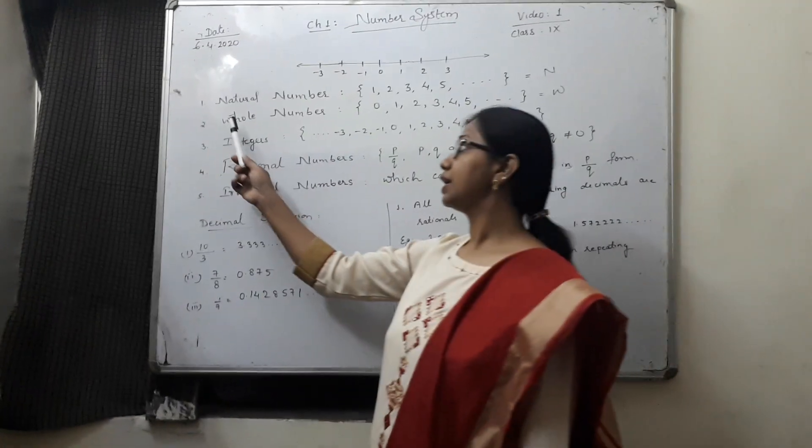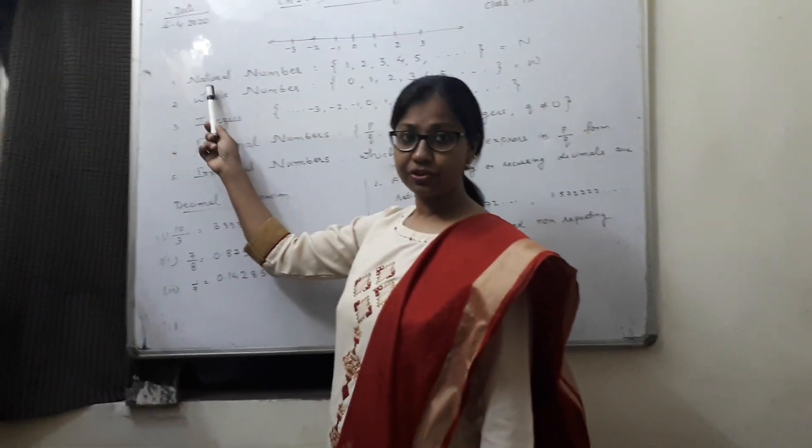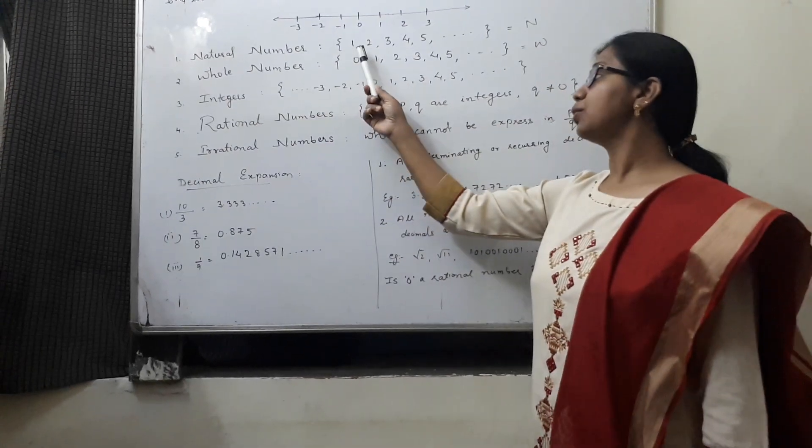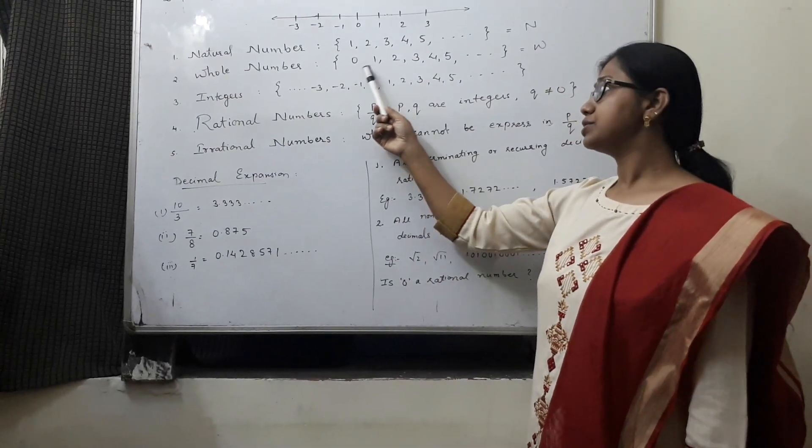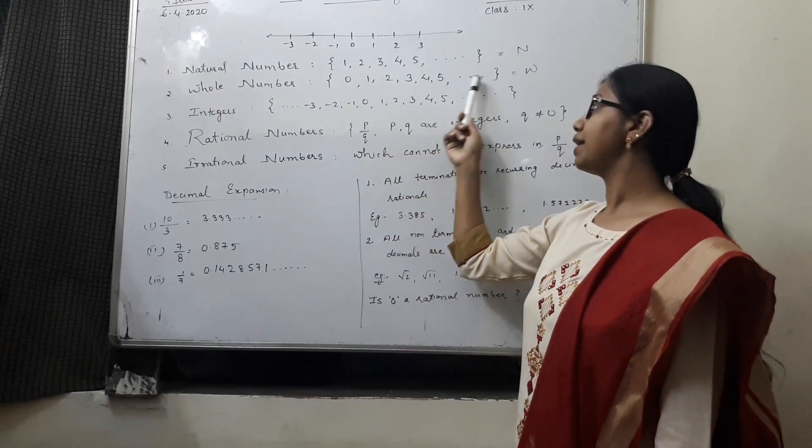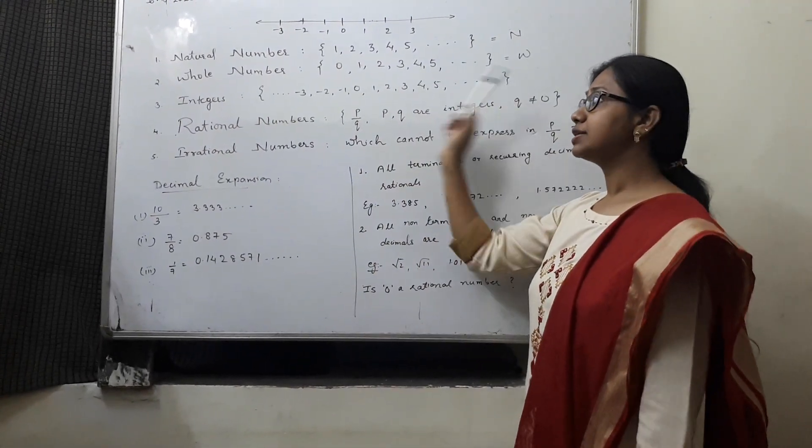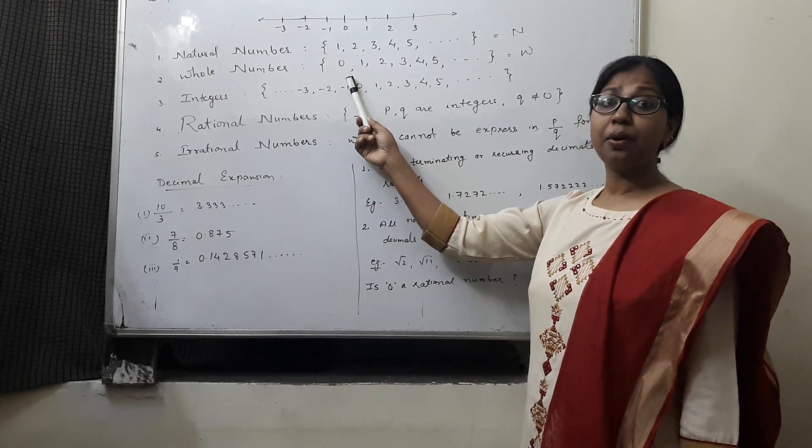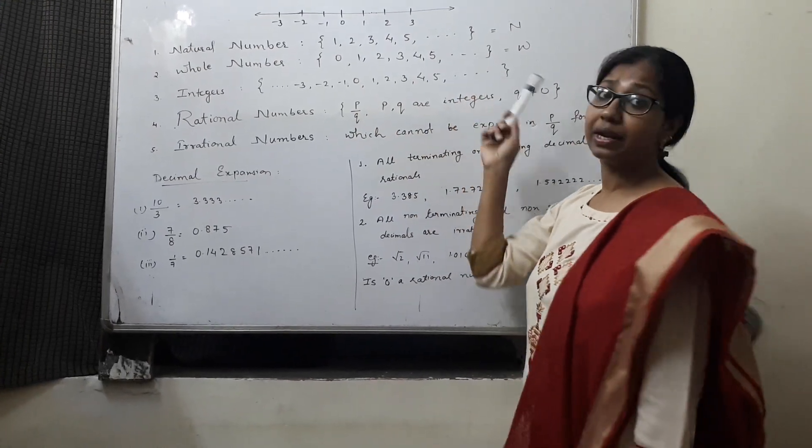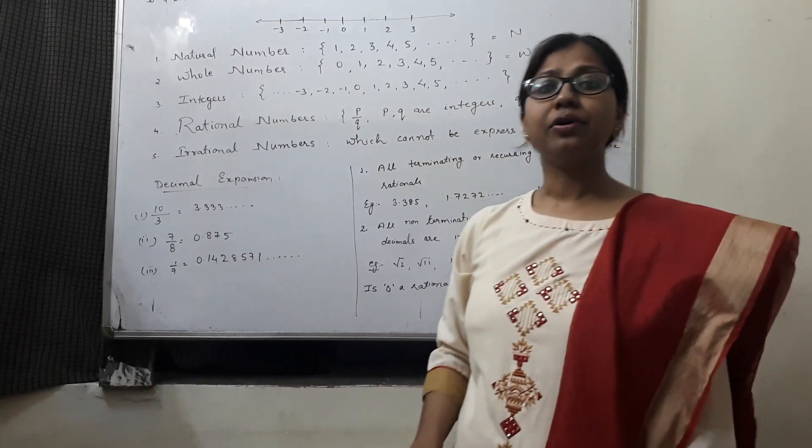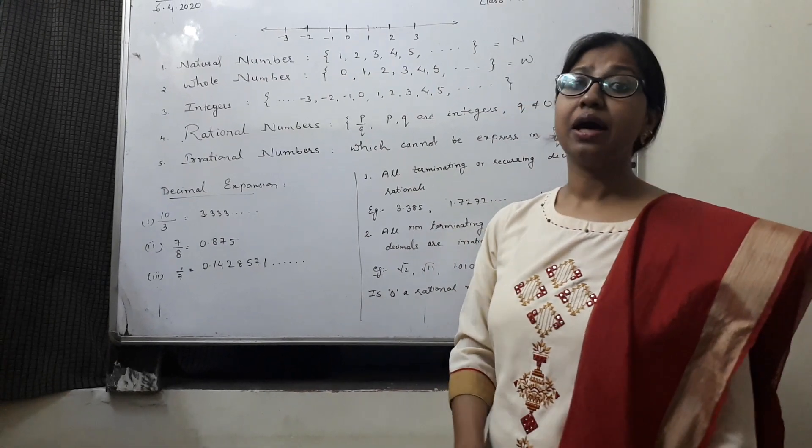This type of number is natural number. If we include 0 in that, 0, 1, 2, 3, 4, 5 and so on is whole number denoted by W. The smallest whole number is 0, but the largest whole number cannot be determined because every number has its successor.